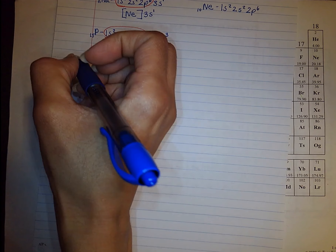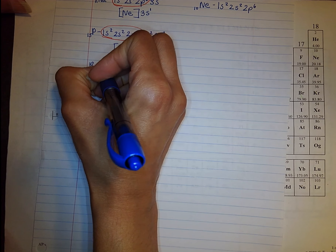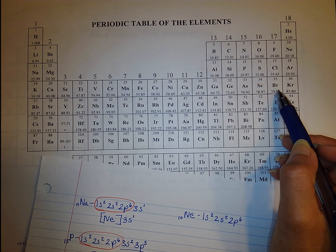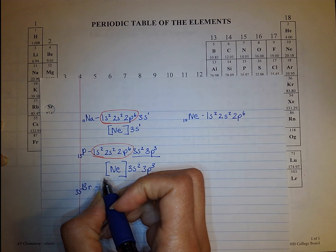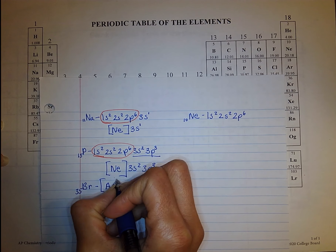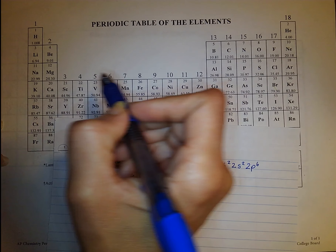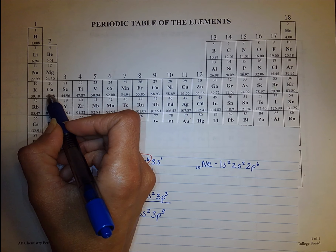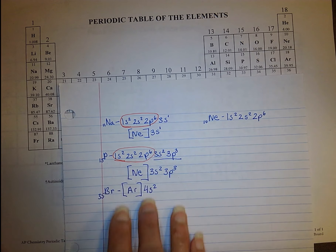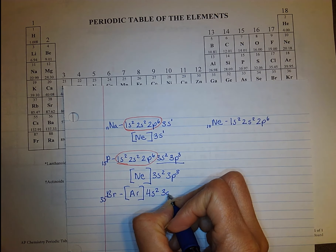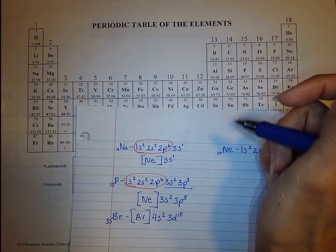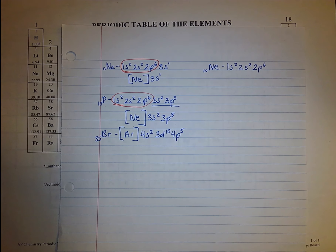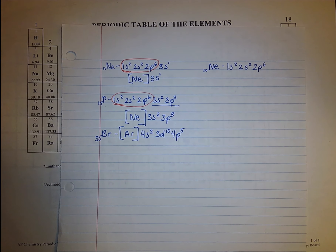Let's try it with bromine, element 35. The noble gas we're looking at for bromine is argon. I'm going to put argon in brackets, and now continue with all the other configuration that comes after argon: 4s2, 3d10, and 4p5. So we have 4p5 — this is the noble gas notation for bromine.